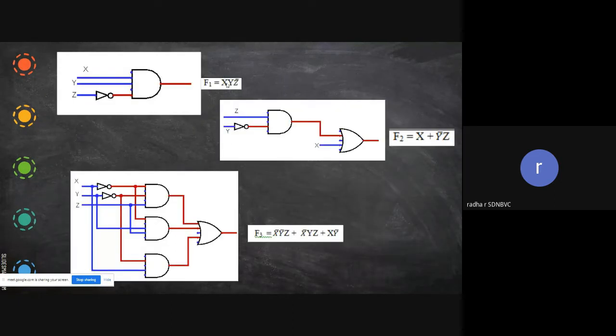It is x multiply by y multiply by z̄. For all these things you need only a three input AND gate. So x is given directly, y is given directly here, and z is z̄ that is complement. So here you use a NOT gate and then you give the connection. This will be your output.